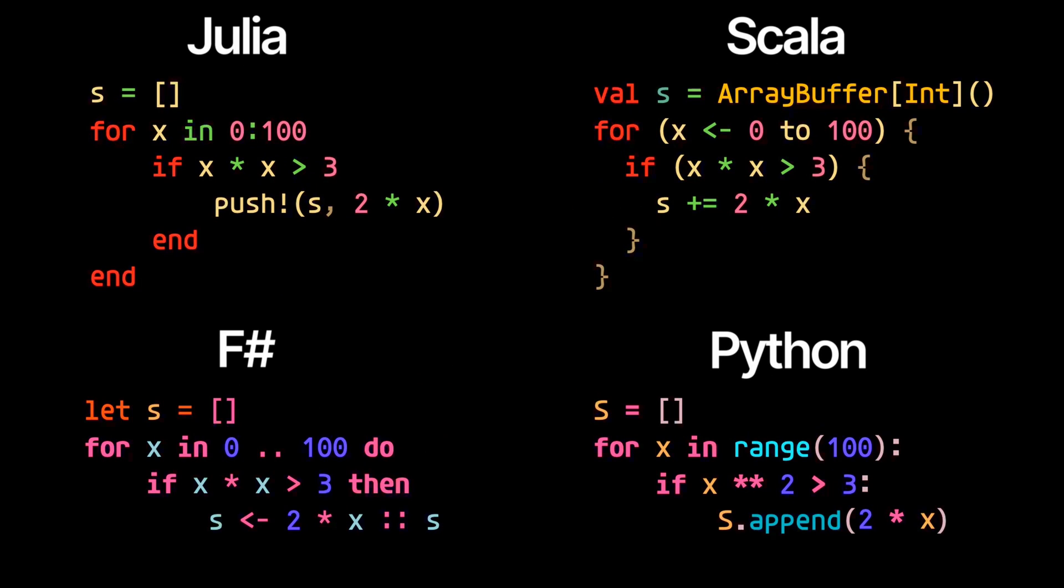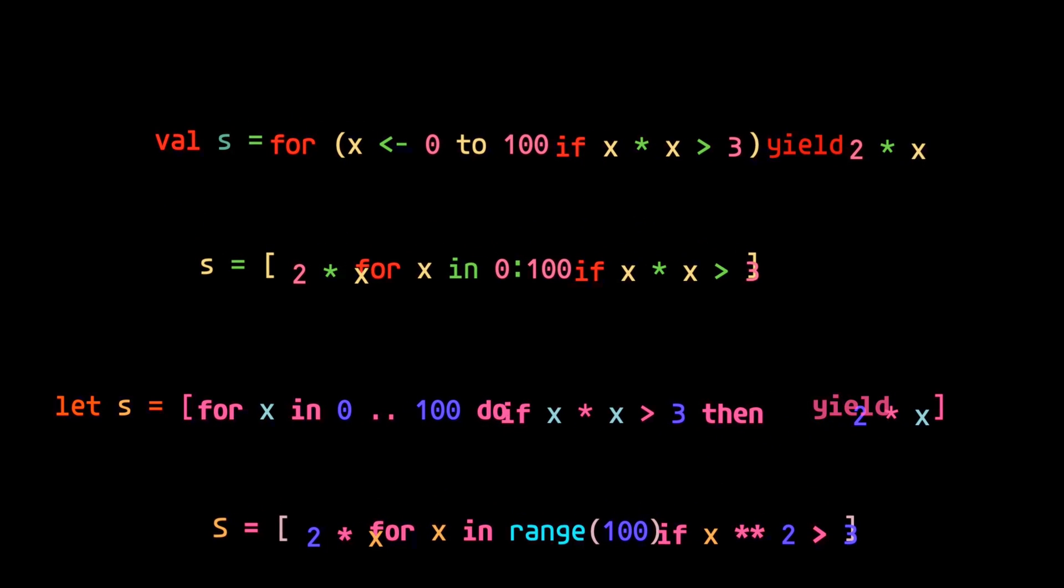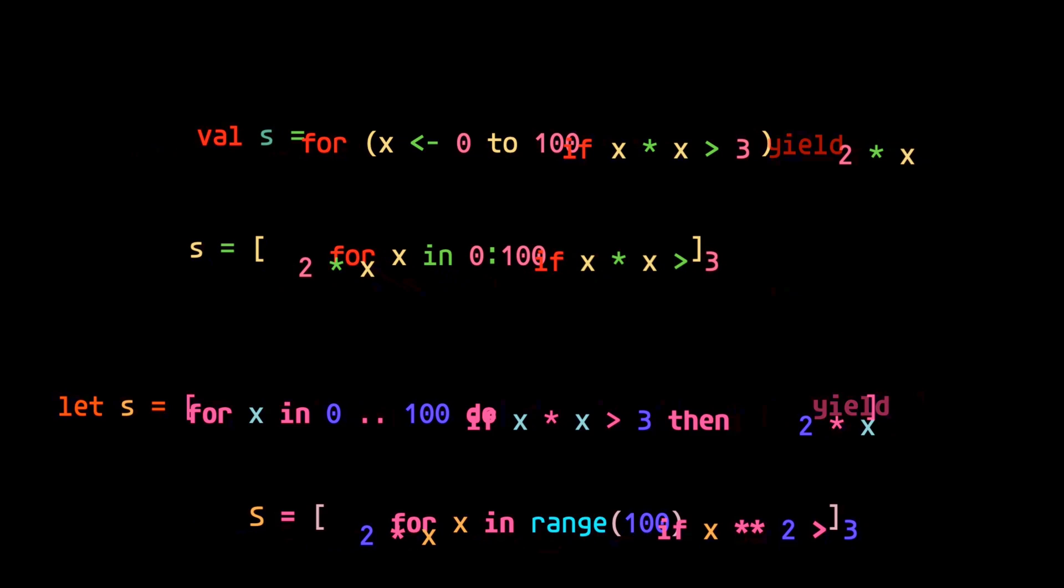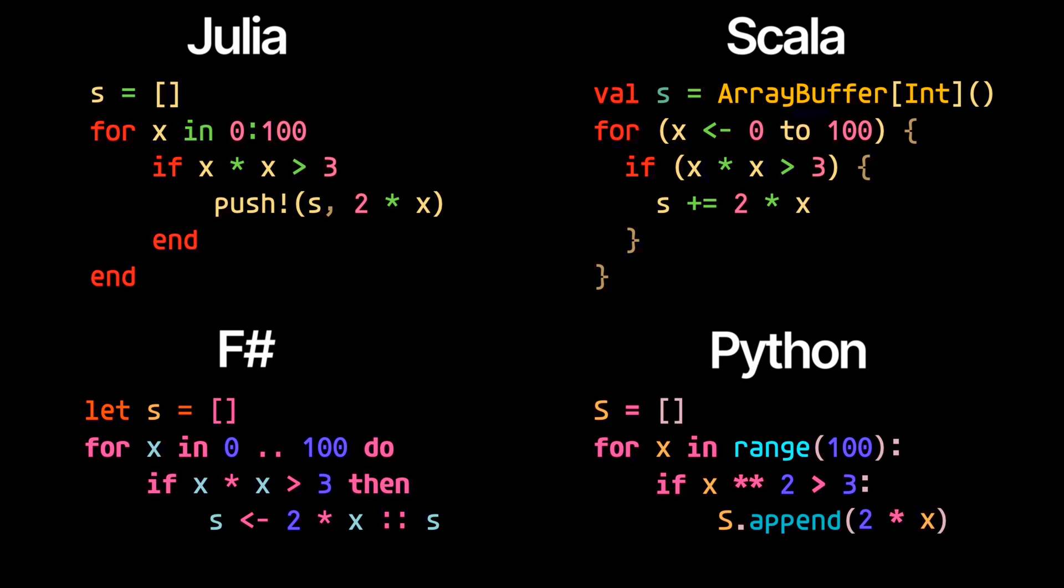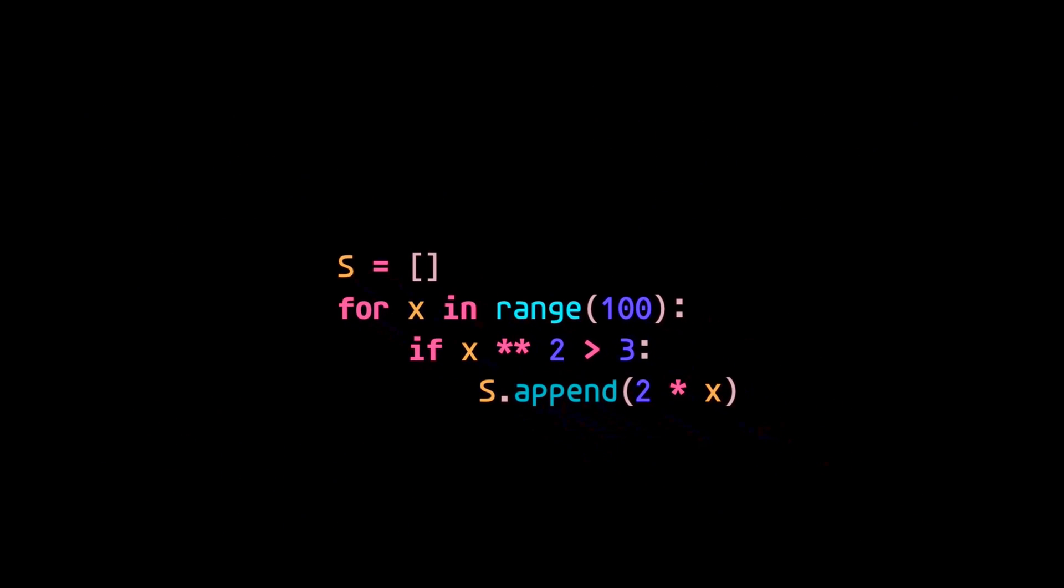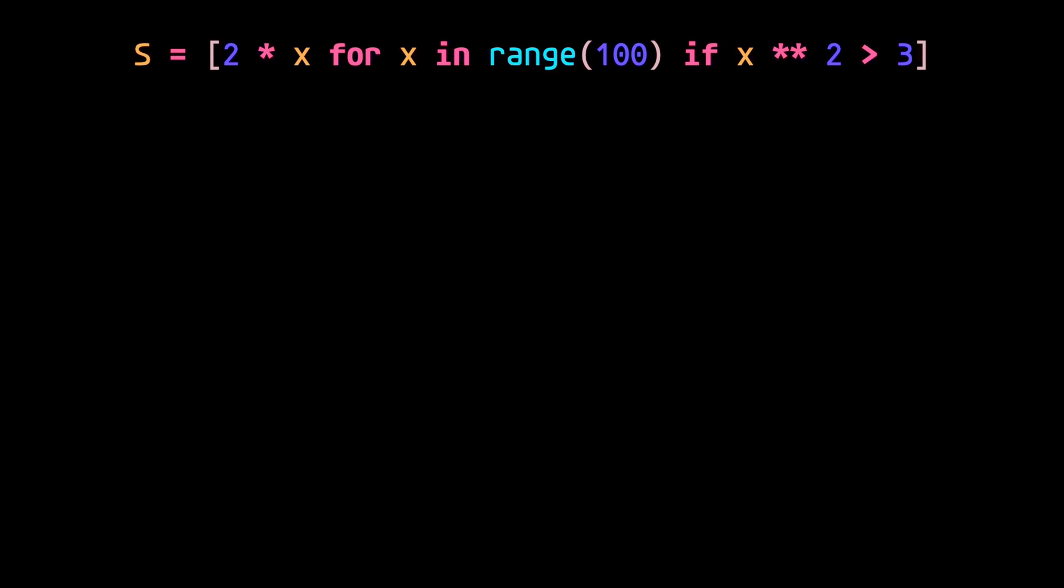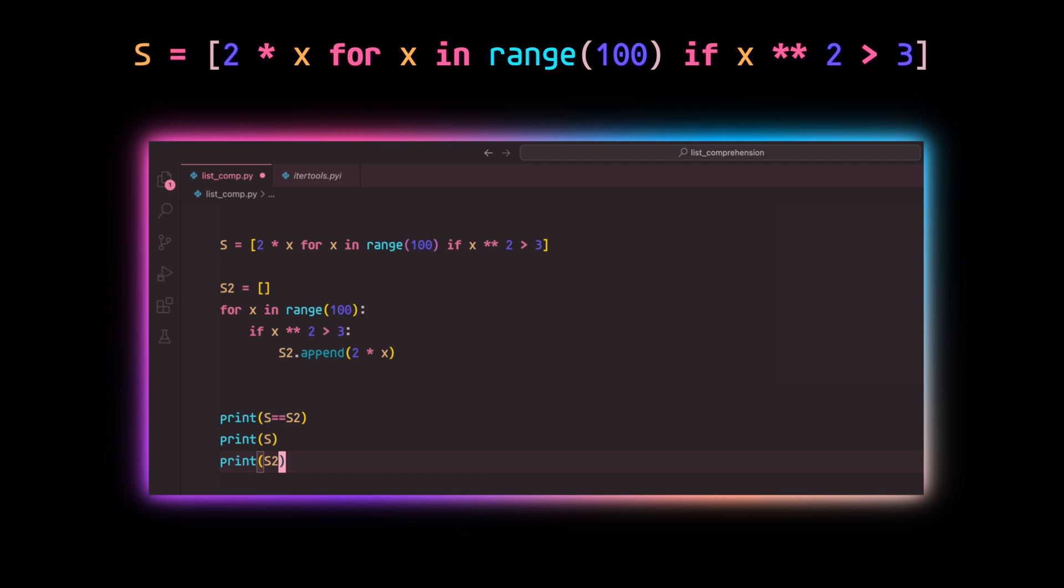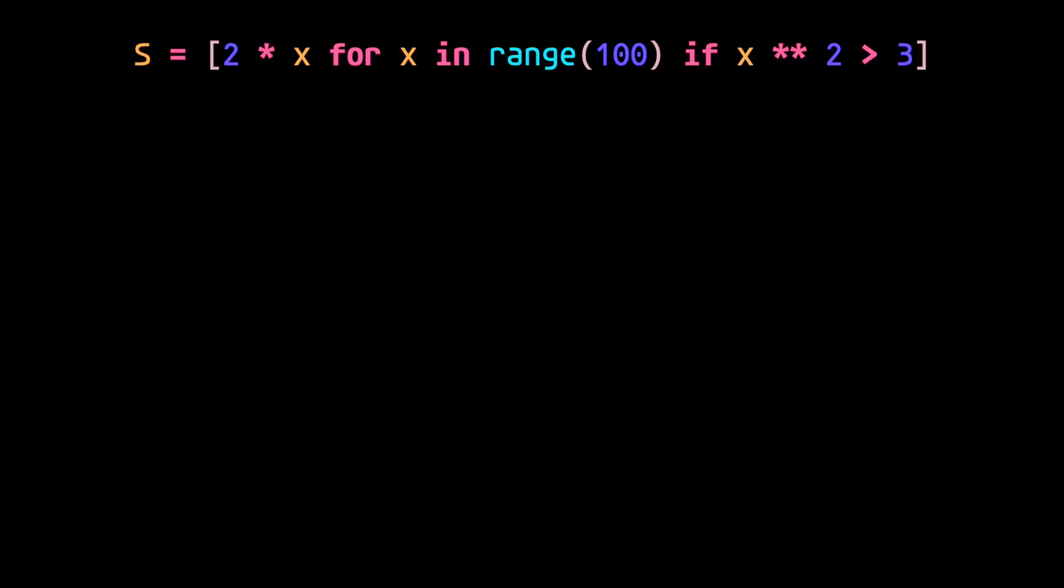Now, there are quite a few programming languages that incorporate the construct known as a list comprehension. But this time around, we'll focus specifically on Python. Basically, a list comprehension enables us to take something like this and compress it into something like this. And both would produce the same resulting list. That's pretty straightforward, right? So, I've found that the most useful way to make use of this is to combine it with another construct, and that construct is called generator expressions.